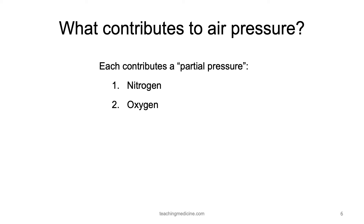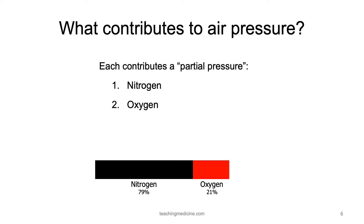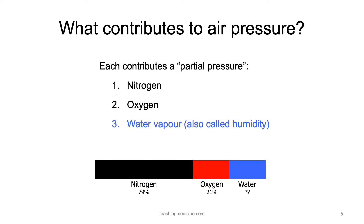Air is comprised mostly of nitrogen and oxygen. Nitrogen comprises 79% and oxygen 21%. In addition to these two primary gases, there is also water vapor, which we call humidity. It's difficult to say what the exact amount of water vapor is in the air because it changes with humidity levels and with temperature.